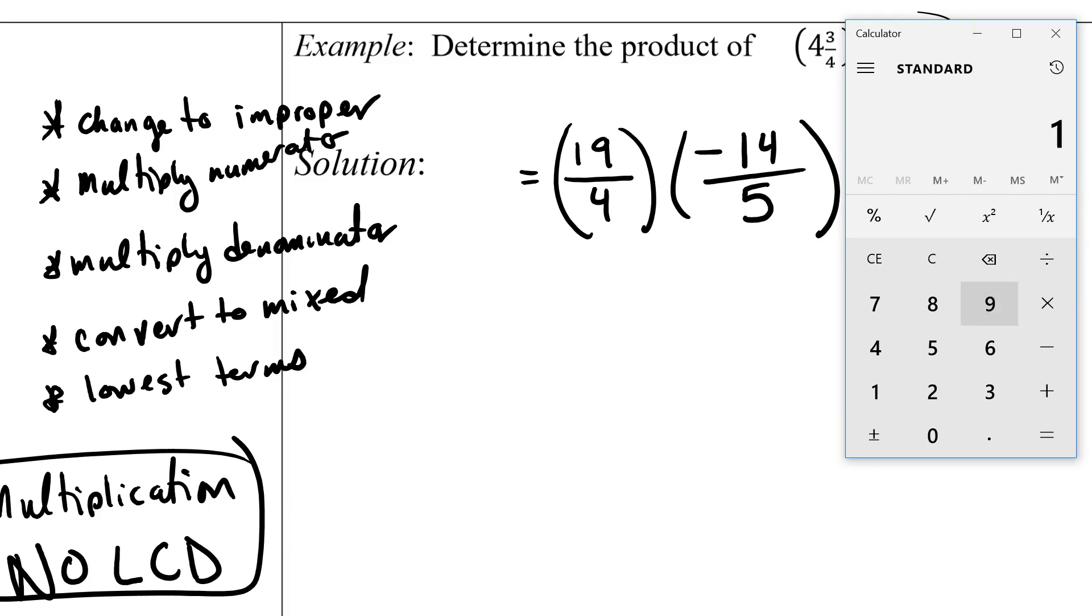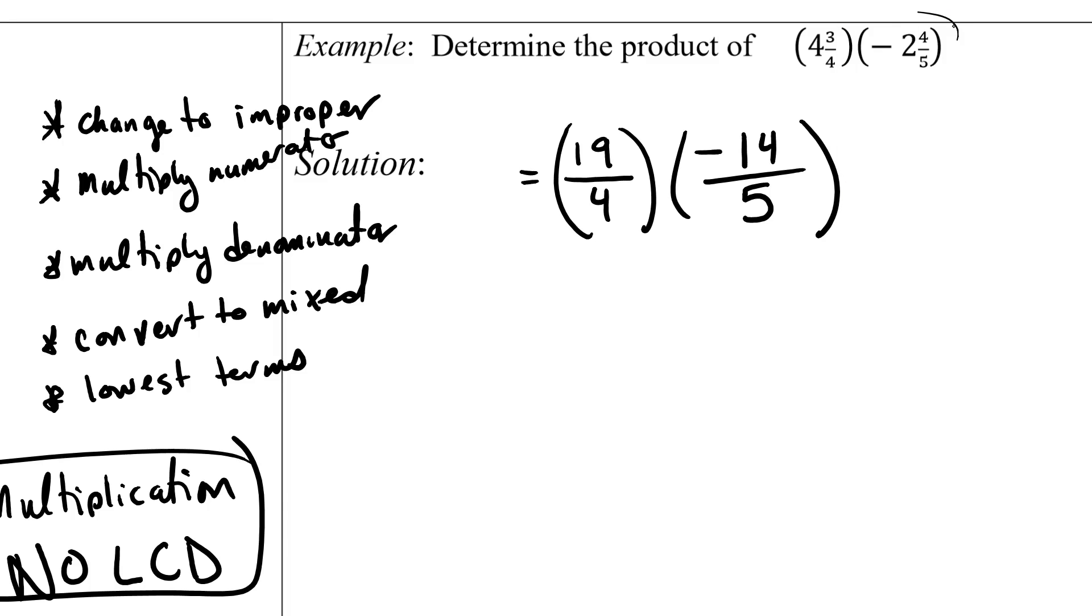I'm going to say 19 times 14 equals... 19 times 14 is 266. The only thing is I know that I'm multiplying by 1 negative. So, I'm going to say negative 266 over 20. What I want to do is I'm noticing that both of these guys are even. So, I'm going to divide both by 2. So, it's going to be negative 133 over 10.